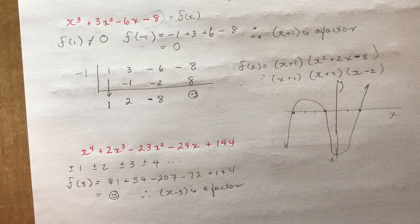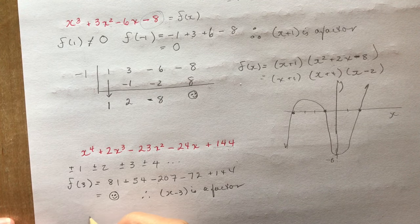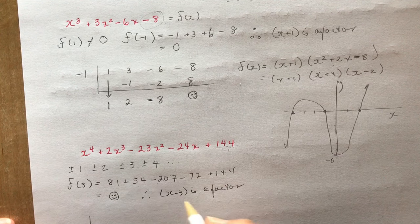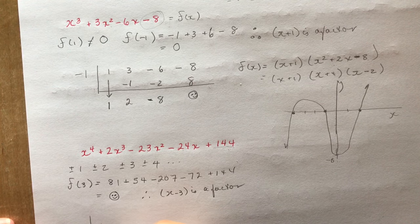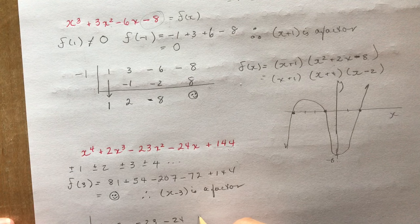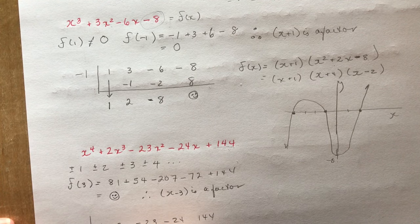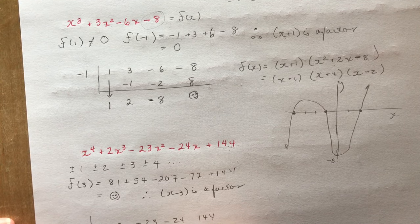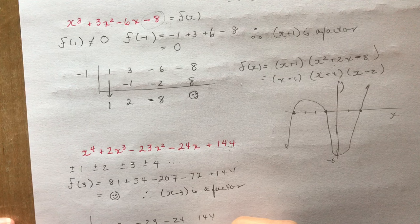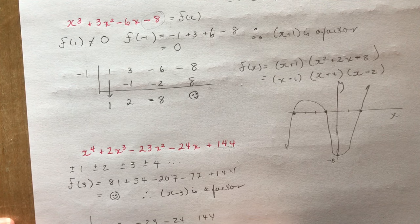So now you know why we learned synthetic division — it's so much faster than long division. So for f at 3 and x minus 3, we have a 3 here and plug in our numbers: 1, 2, minus 23, minus 24, 144. Bring down the 1, times 3, add them together; 15, add them together; minus 8; minus 24; minus 48; and this is minus 144, and 0.